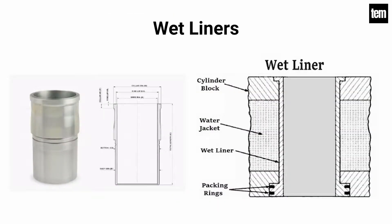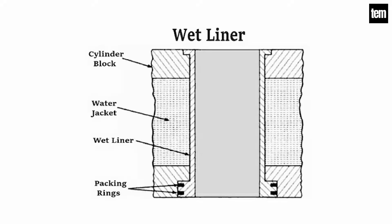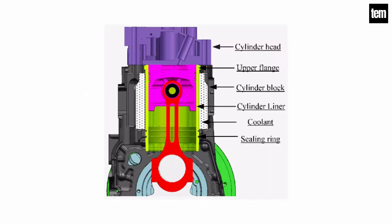Wet liners are in direct contact with the cooling water at their outer surface. Therefore, wet liners are usually heavy and thick-walled. This liner is provided with a flange at the top which fits into the groove made in the cylinder block. To stop leakage of cooling water into the crankcase, the lower end of the wet liner is sealed with the help of sealing rings or packing rings.